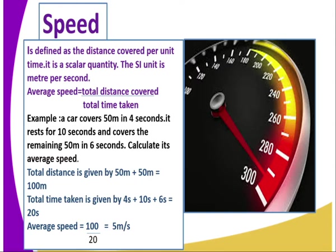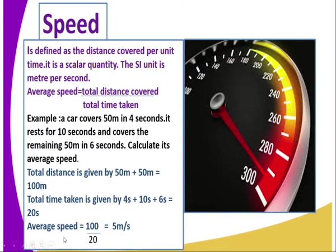Average speed is given by total distance covered divided by total time taken. For example, a car covers a distance of 50 meters in 4 seconds, rests for 10 seconds, and covers the remaining 50 meters in 6 seconds. Calculate its average speed. Total distance is 50 plus 50, which gives 100 meters. Total time taken is 4 plus 10 plus 6, which gives 20 seconds. So the speed is 100 divided by 20, which is 5 meters per second.